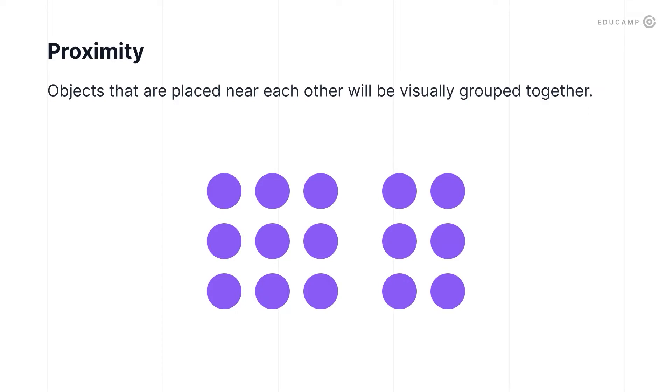The first Gestalt principle: the principle of proximity. Objects that are placed near each other will be visually grouped together. It seems like common sense, but again and again I see the same mistakes with this principle.